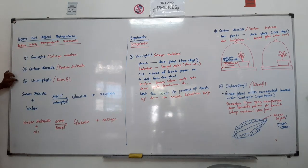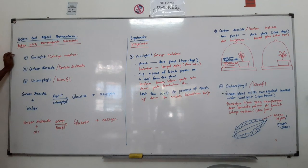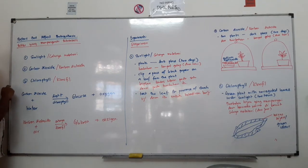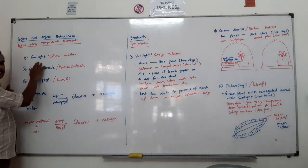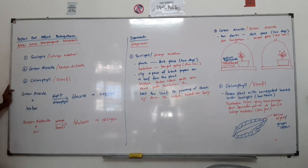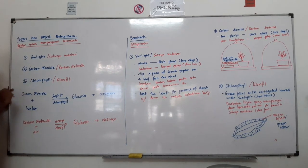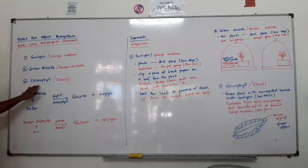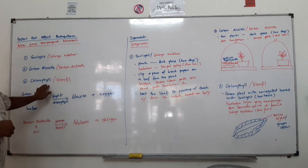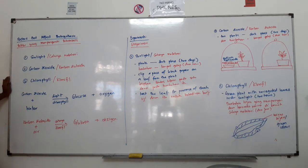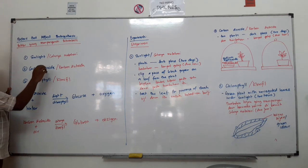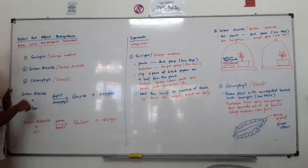When you go for factors that affect photosynthesis, there are three factors. The first one is cahaya matahari (sunlight), the second is carbon dioxide, and the third is chlorophyll. Photosynthesis needs all three factors. Green plants obtain energy from sunlight. Carbon dioxide is used up by green plants, and chlorophyll is the green pigment needed by plants to absorb sunlight.